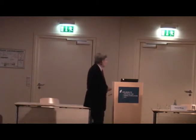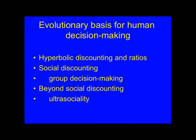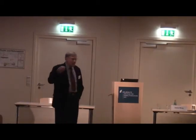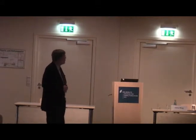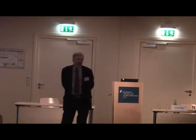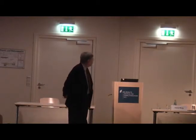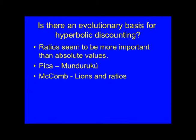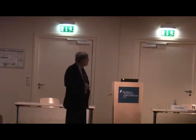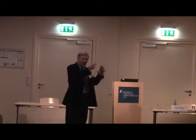So the evolutionary basis for human decision making — there seems to be an evolutionary basis for hyperbolic discounting. There's a French anthropologist called Taika who did a study of a group in the Amazon called the Munduruku. This is a tribe that doesn't have numbers; they really don't count. They can count up to four — one, two, three, four, many. He had them do an experiment with dots on a computer screen, from one to ten dots.